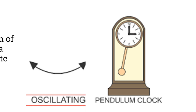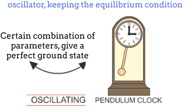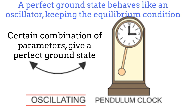However, under some special circumstances, for some combinations of the three parameters of the system, the ground state is perfect in the sense that it also obeys all the symmetries of the Hamiltonian. Then no random fluctuations will change the martingale state. In this case, the system will just oscillate like a pendulum around its equilibrium condition.